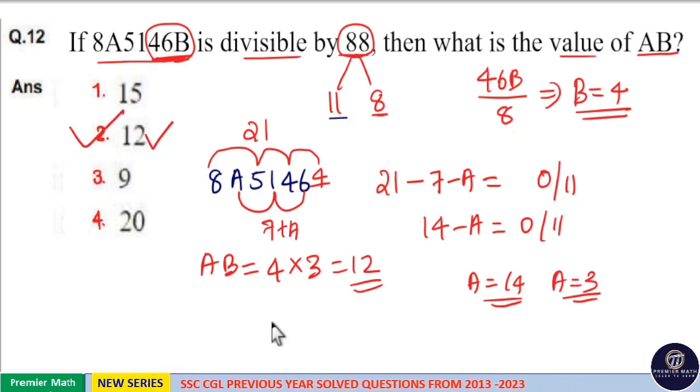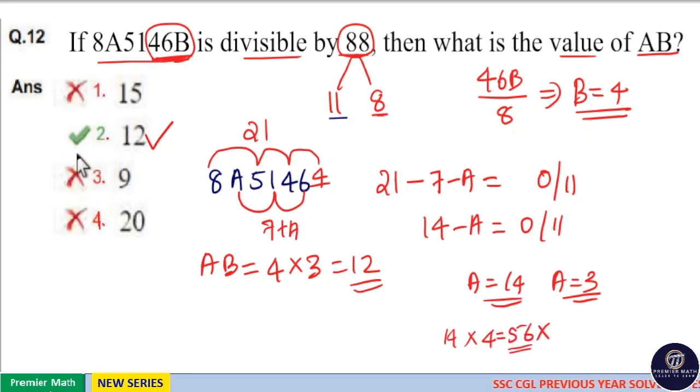So, option 2 is your answer. If I take 14, 4 times 14 is 56, which is not in the option. So, option 2 is your answer. That is, AB equals 12.